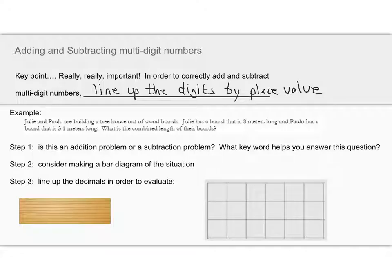Let's take a look at the first example. Julie and Paolo are building a treehouse out of wood boards. Julie has a board that is eight meters long, and Paolo has a board that is 3.1 meters long. What is the combined length of their boards? I want you to think about a few steps. The first is step one. You have to decide, is this an addition problem or a subtraction problem? Look in the problem and see if there's a word that helps you decide that. In this case, I see the word combined, and combined almost always means add. So this is an addition problem.